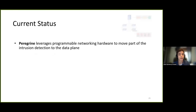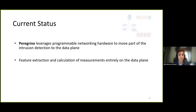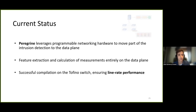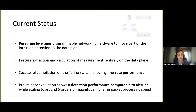To summarize, we have presented the Peregrine framework, which leverages programmable networking hardware to move a subset of the components present in the traditional intrusion detection system to the network data plane. Specifically, Peregrine performs packet feature extraction and the calculation of traffic statistics entirely on the data plane. We have successfully compiled Peregrine for the Tofino native architecture, ensuring line rate performance. We have also performed a preliminary evaluation comparing anomaly detection results obtained by Peregrine with those of Kitsune, showing comparable results in terms of detection performance while scaling to around 5 orders of magnitude higher in terms of packet processing speed.